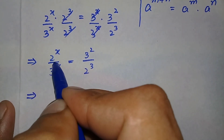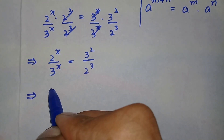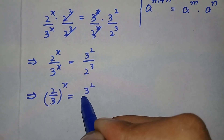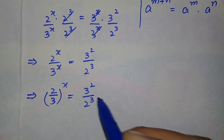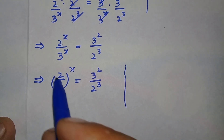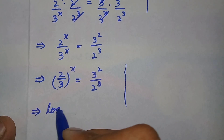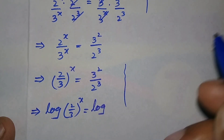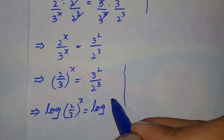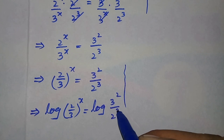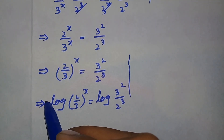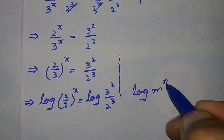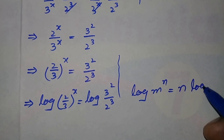In the next step, from the left hand side we take x as common, so it becomes: 2 divided by 3, all raised to power x, is equal to 3 raised to power 2 divided by 2 raised to power 3. Now in this step we will take log on both sides, giving us: log of (2 divided by 3) raised to power x equals log of 3 raised to power 2 divided by 2 raised to power 3. The log formula used here is: log of m raised to power n is equal to n times log of m.